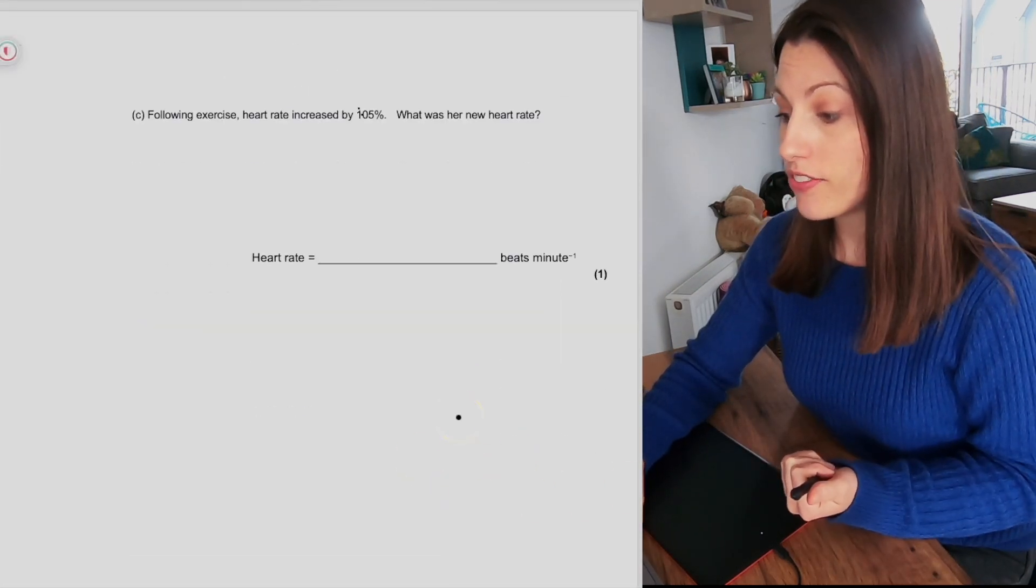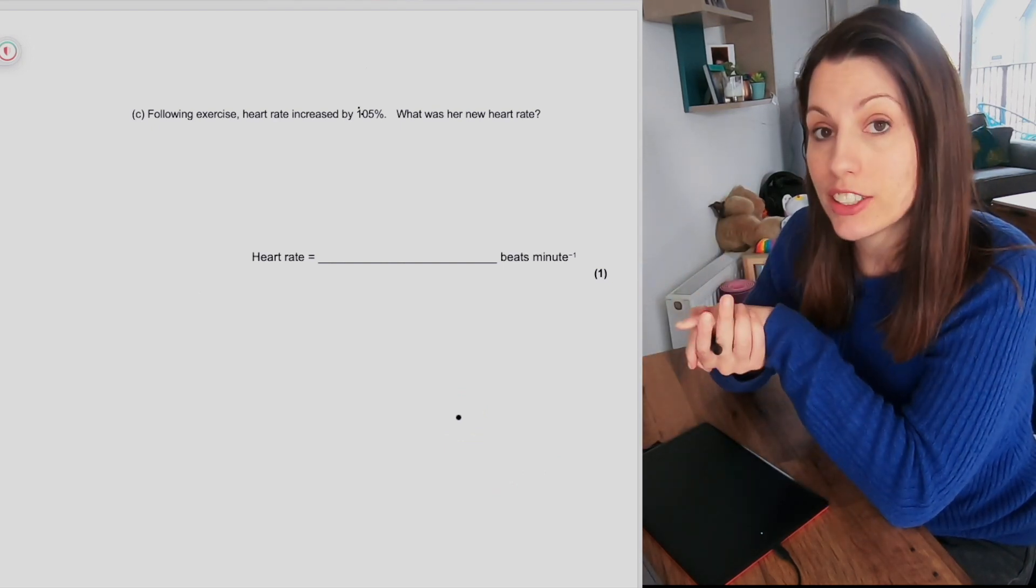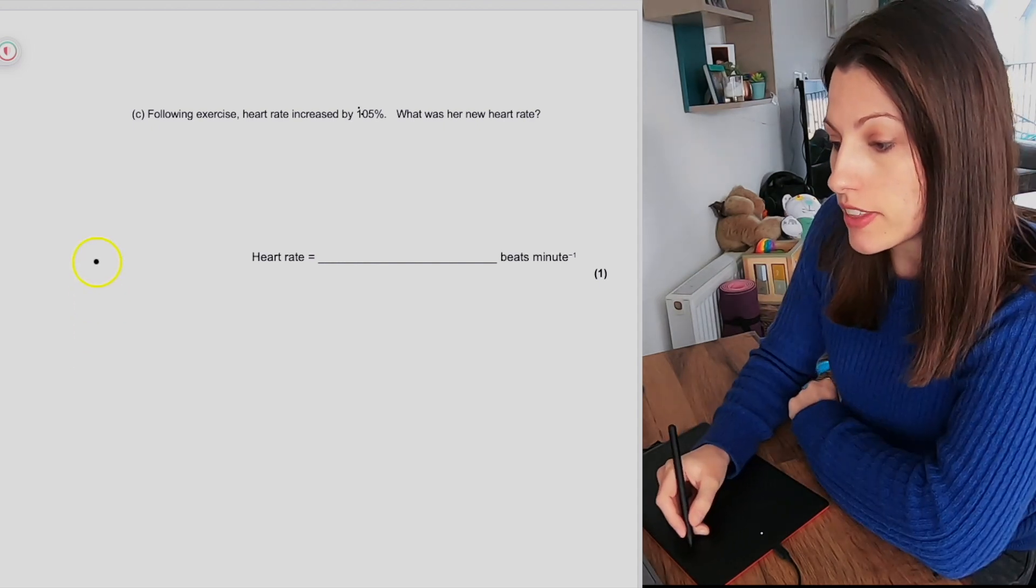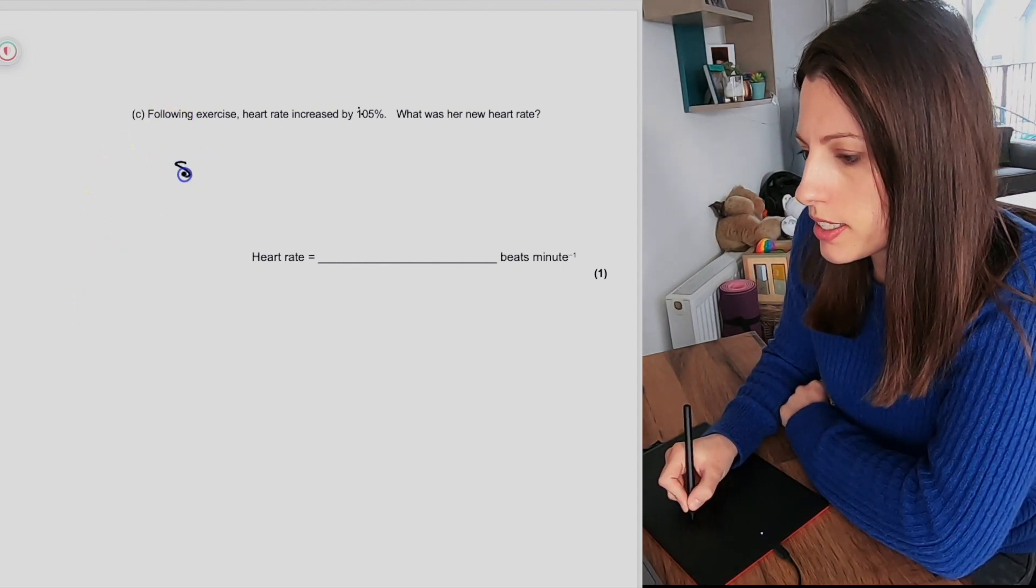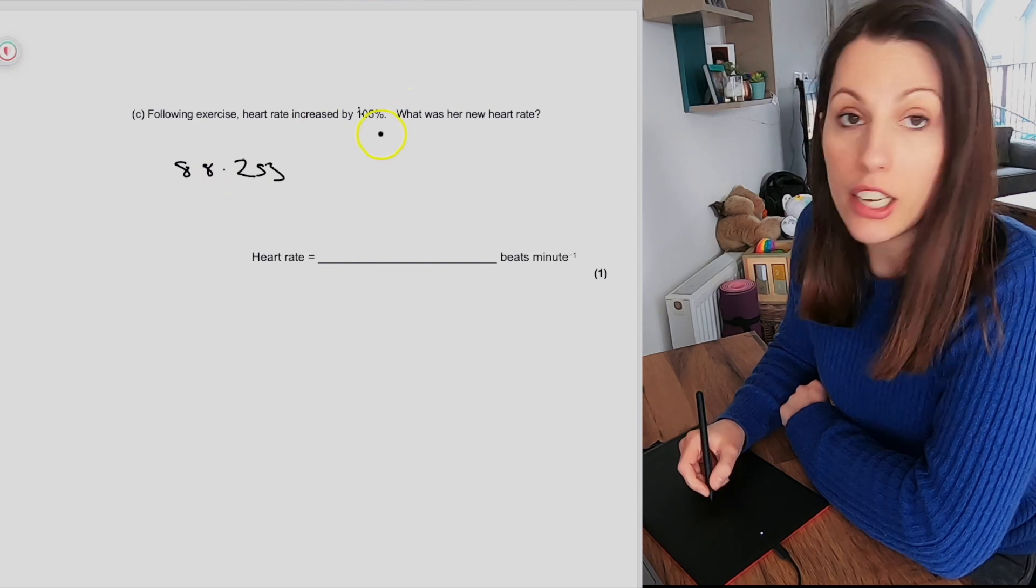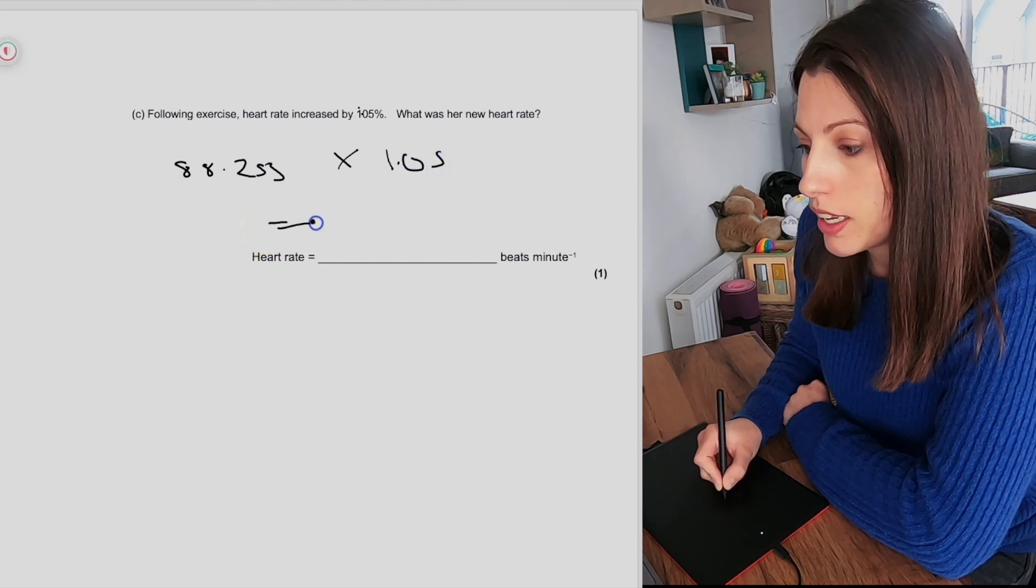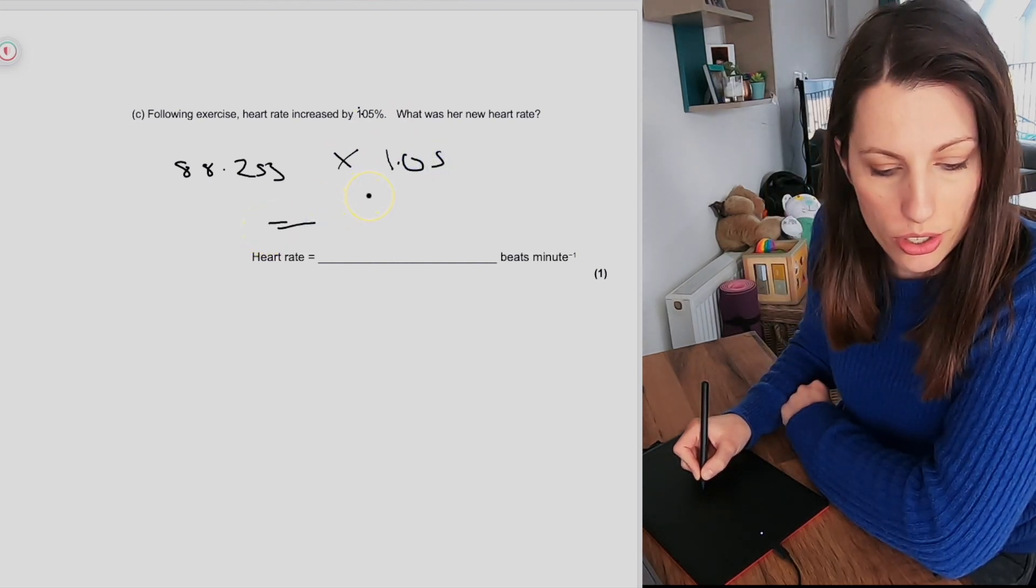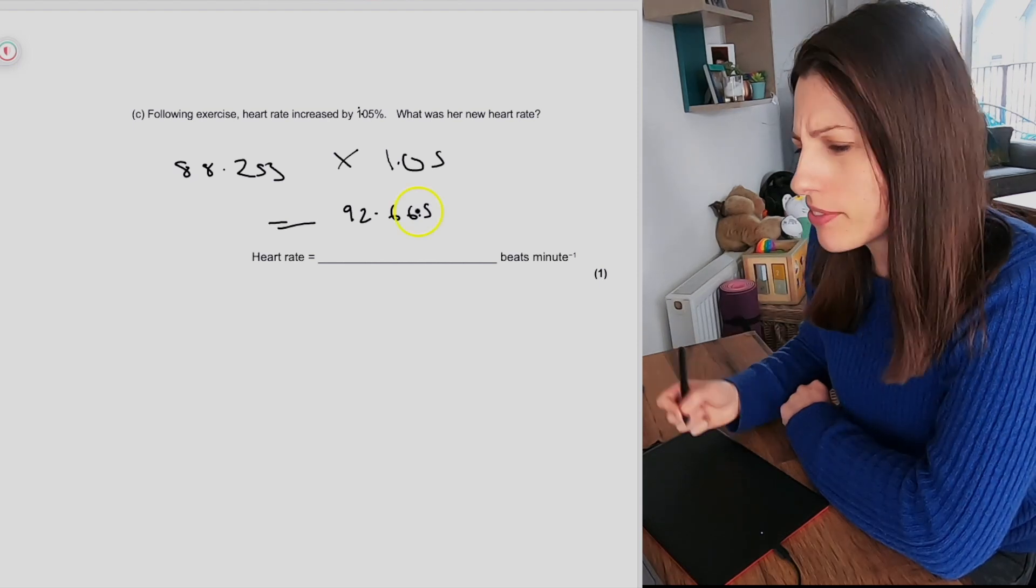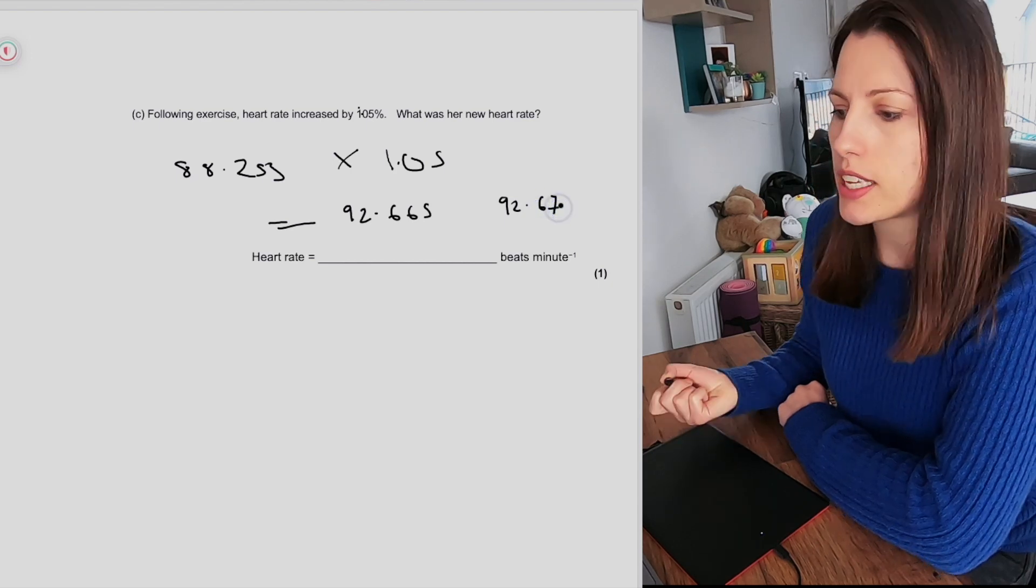So if we scroll down, the final question is another maths question. Following exercise, the heart rate increased by 105%, and you have to calculate what the new heart rate is. So the original heart rate was 88.253 beats per minute, but that's increasing by 105%, so we'll do multiply by 1.05, and that then comes to 92.665 beats per minute. I'm going to round that up though, so we'll say 92.67 beats per minute.